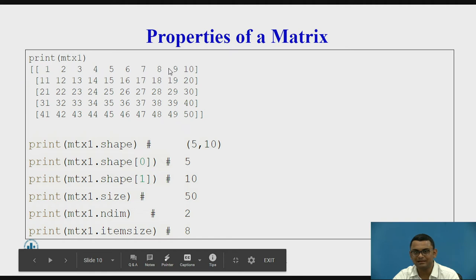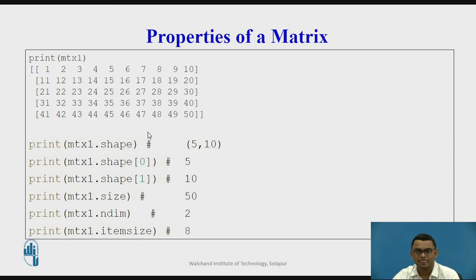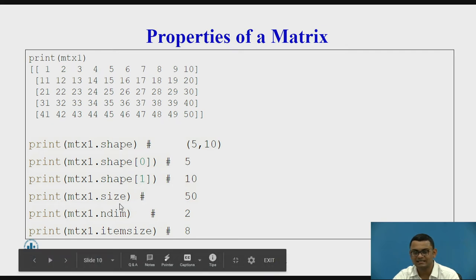I have printed a sample matrix called MTX1 having 50 elements. matrix.shape gives the output (5, 10), specifying the number of rows and columns. shape[0] gives 5 rows, shape[1] gives 10 columns, and size is 50. The dimension of the matrix is 2 and the itemsize — the size of an integer — is 8 bytes. This is the output we get for the properties of the array.